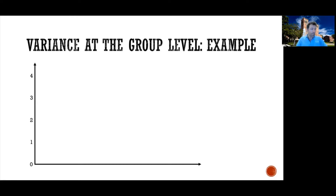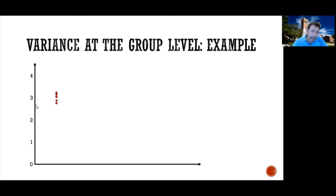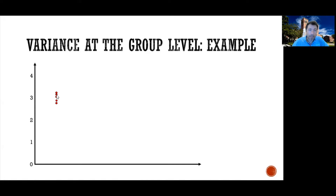Let's start with participant one. The y-axis shows how much better participants are doing with my strategy compared to when they don't use my strategy. Subject one came to the lab five times. The first time, the difference was about 2.75 points. Then the next time they did about 3 points better, then 3.25, then 3.15, and the last time they did 2.9.